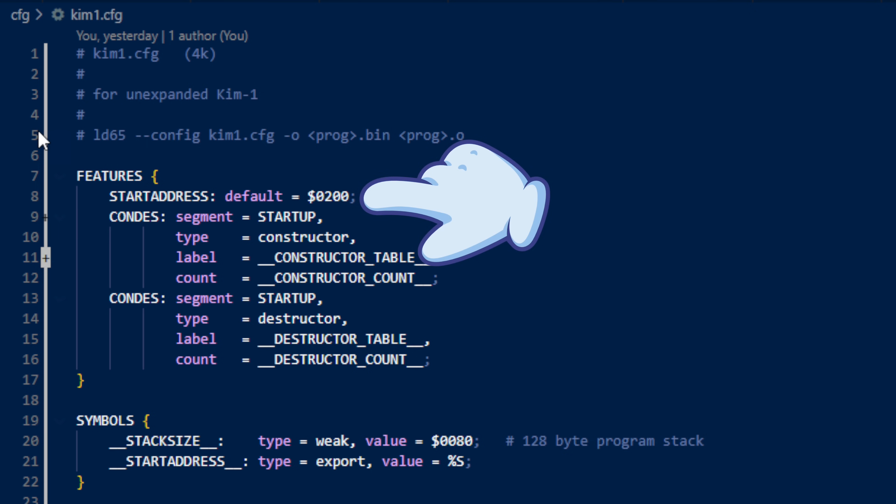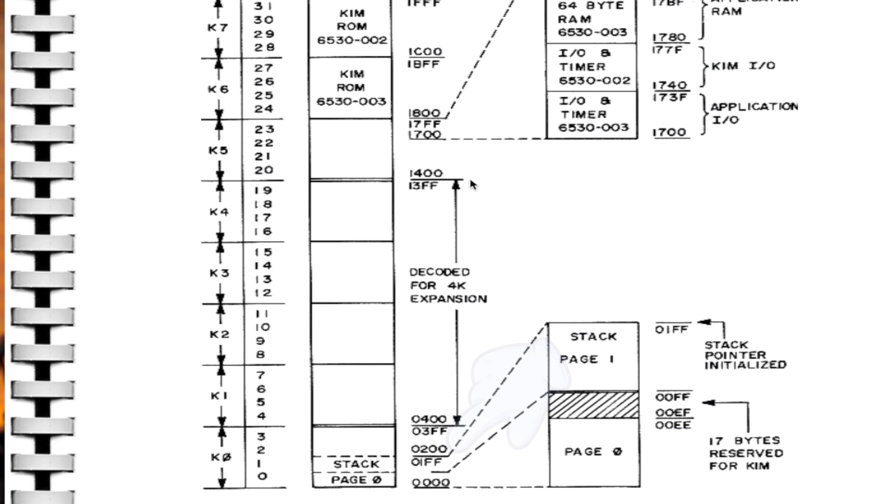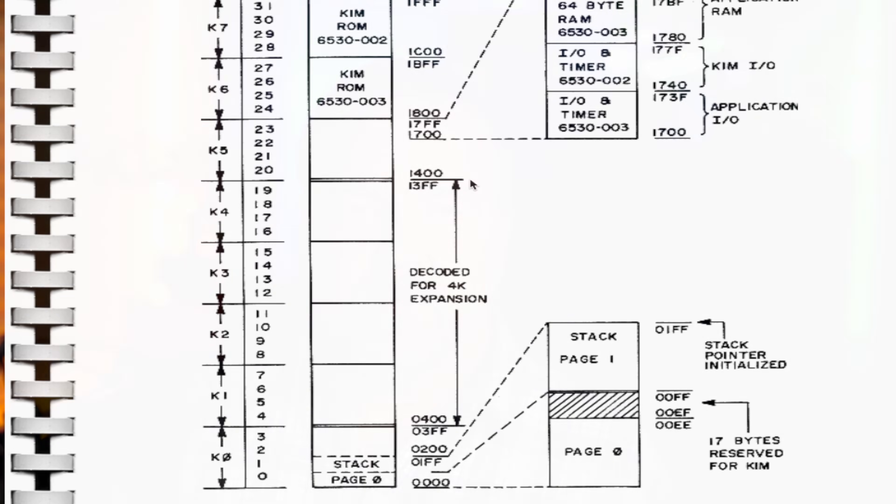One highly important declaration is the default start address where our app should be loaded into memory. Because 6502 code uses all kinds of absolute addressing, and it's not relocatable in any way — a program is compiled and assembled to live at a particular address, and that's the only address it will work at. For a non-expanded KIM-1, we can see from the memory map in the system manual that available memory starts at hex 0x200, right after the stack and zero page, and that's where we should base and load our apps. For an expanded KIM-1, it's more complicated: the system RIOT chips are mapped into memory around 0x1700, and RAM picks up again at 0x2000. We could put the code at 0x200 and the heap at 0x2000, or base everything at 0x2000 and use the low memory some other way.